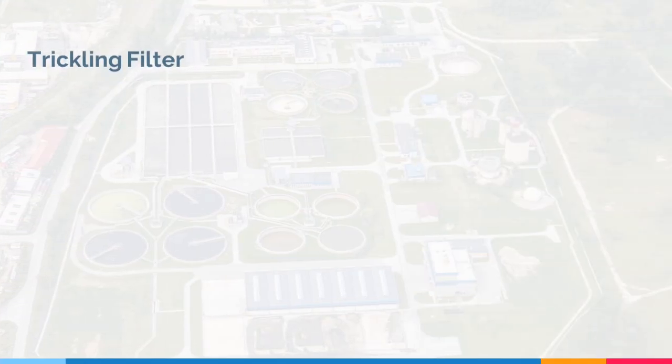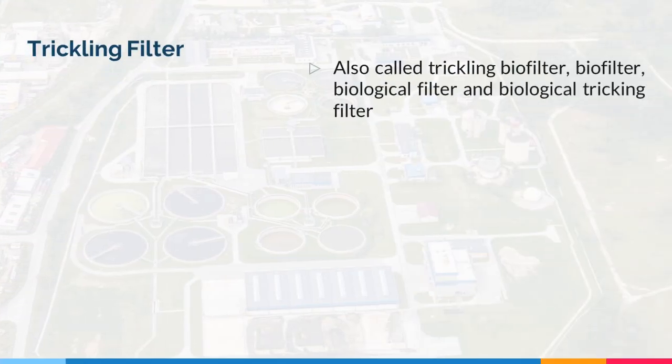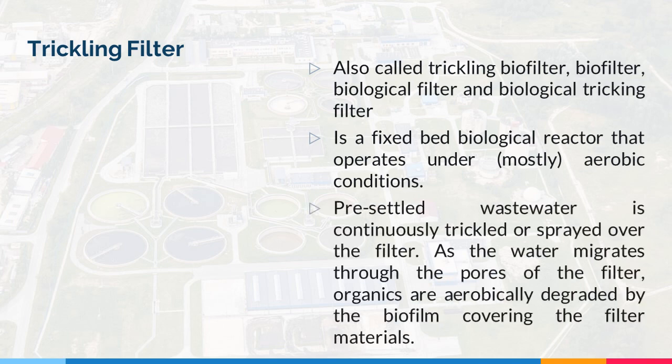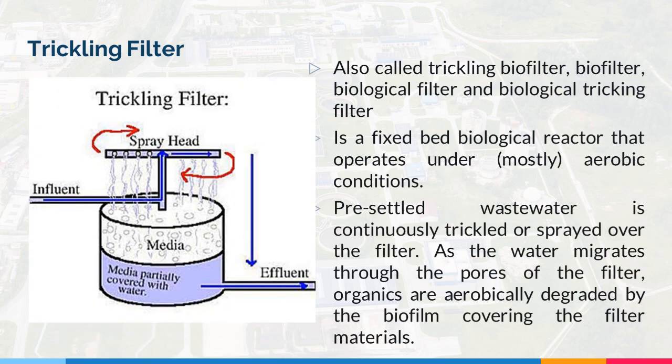Next, we have the trickling filter, also called the trickling biofilter, biofilter, biological filter, and biological trickling filter. It is a fixed bed biological reactor that operates under aerobic conditions. Pre-settled wastewater is continuously trickled or sprayed over the filter. As the water migrates through the pores of the filter, organics are aerobically degraded by the biofilm covering the filter materials.